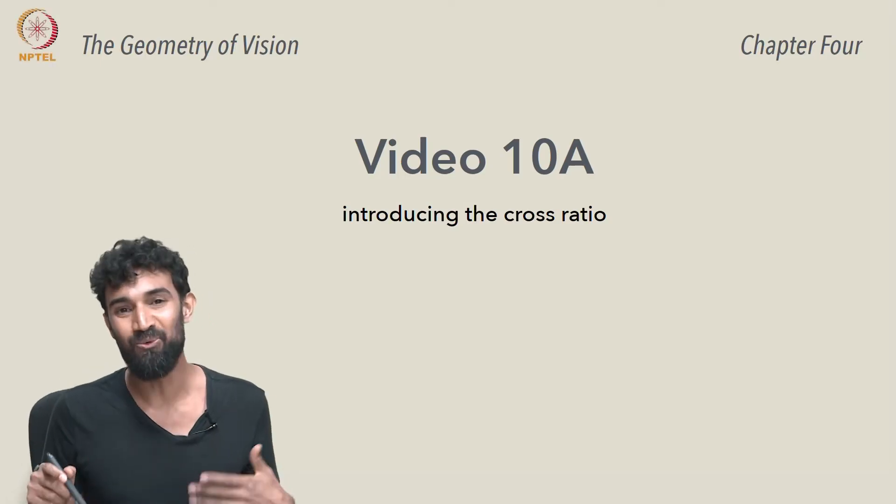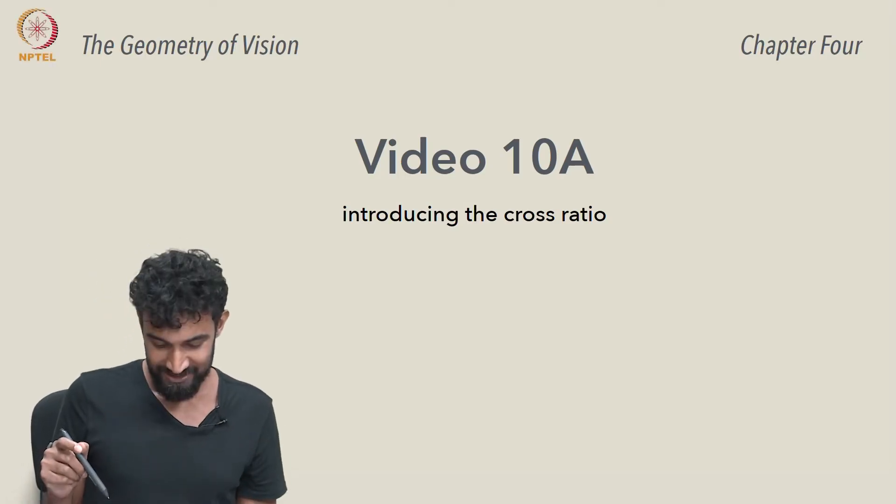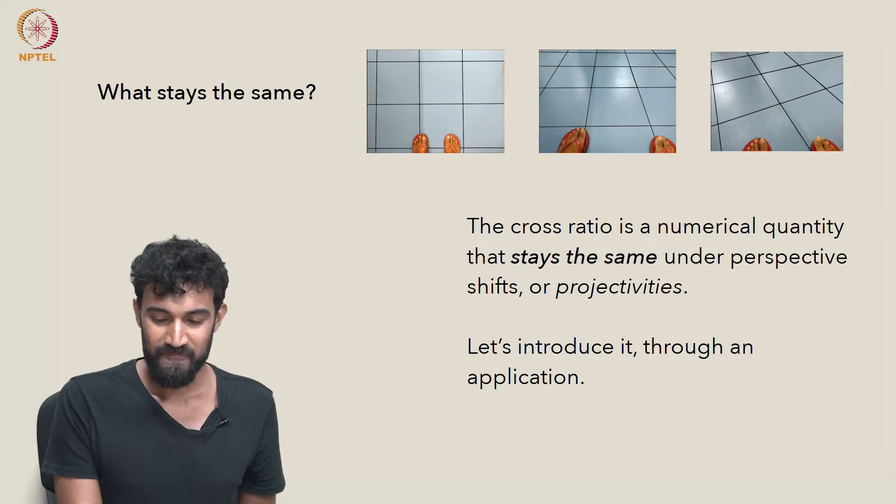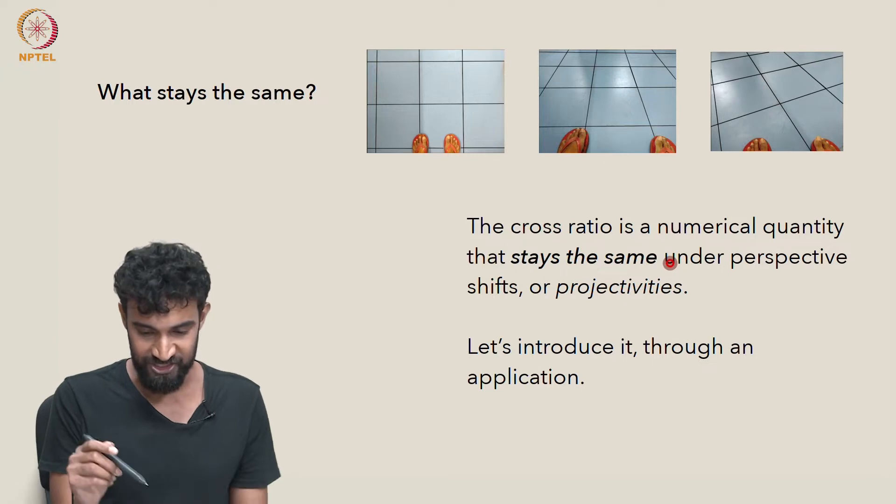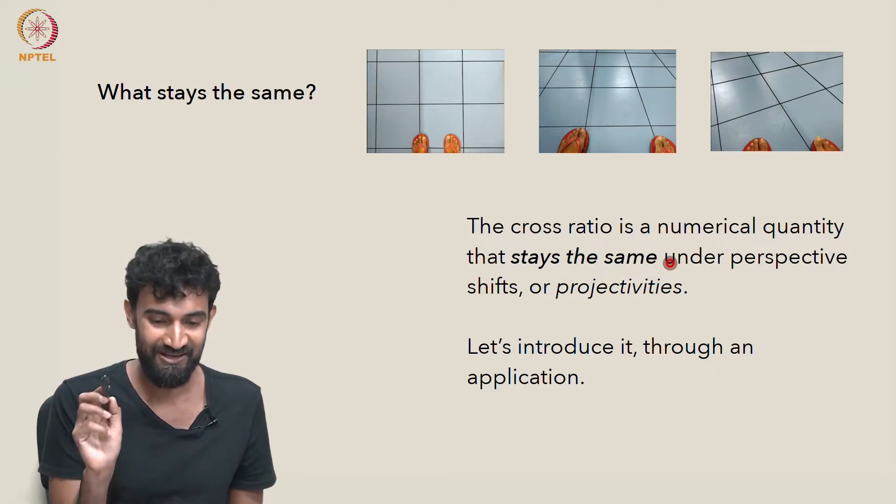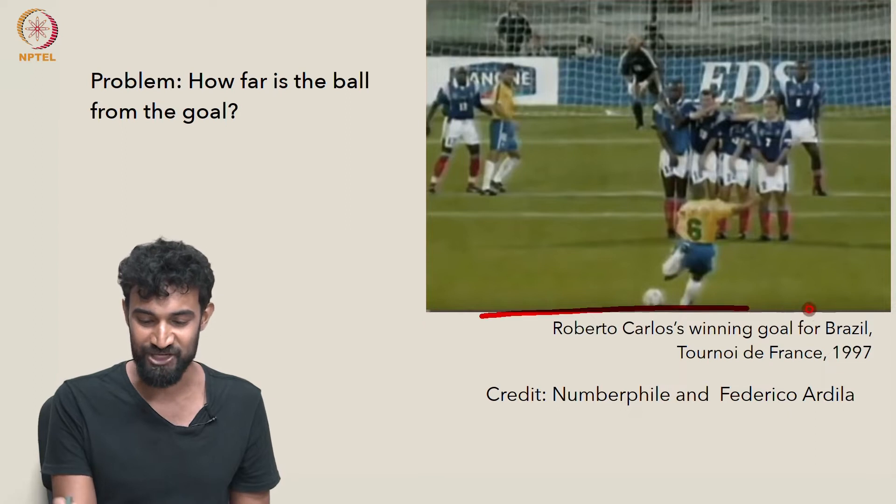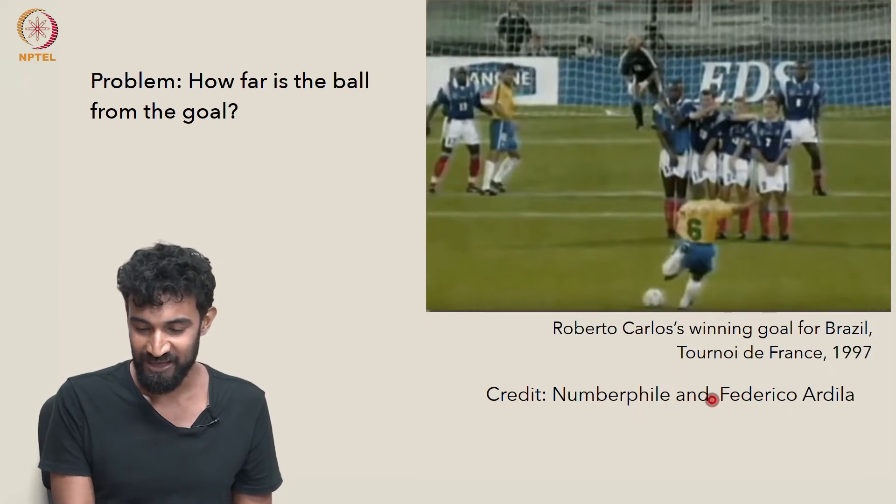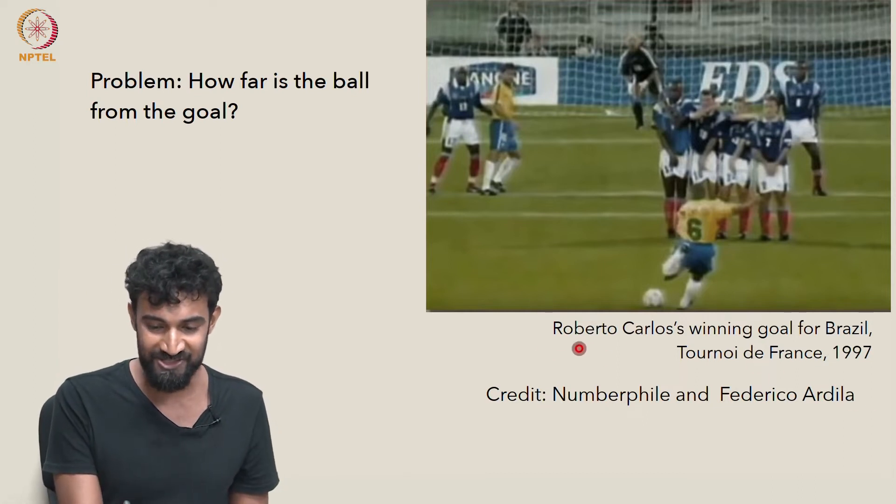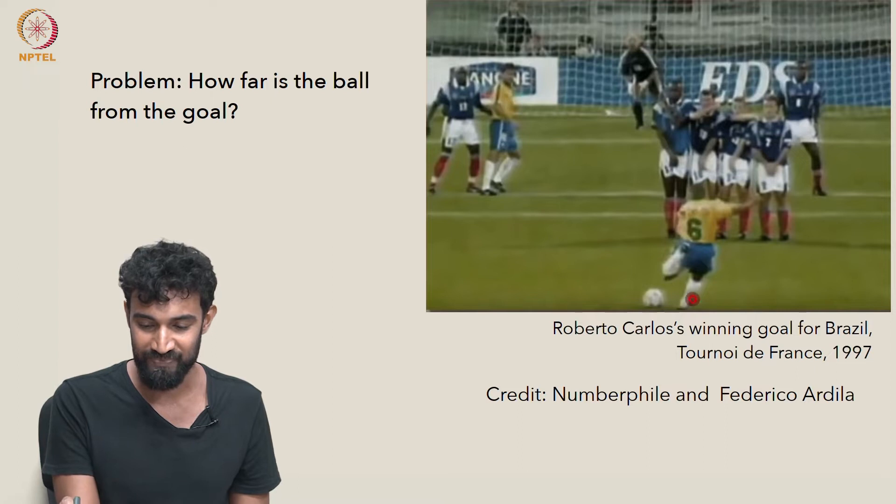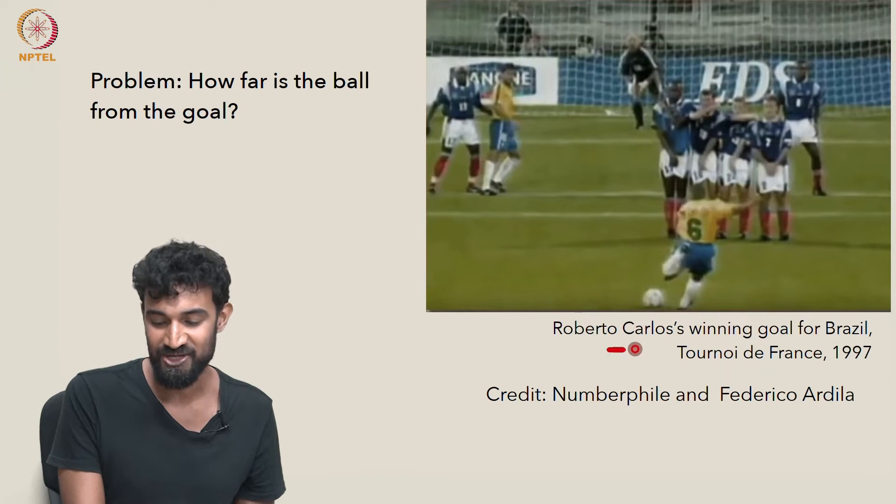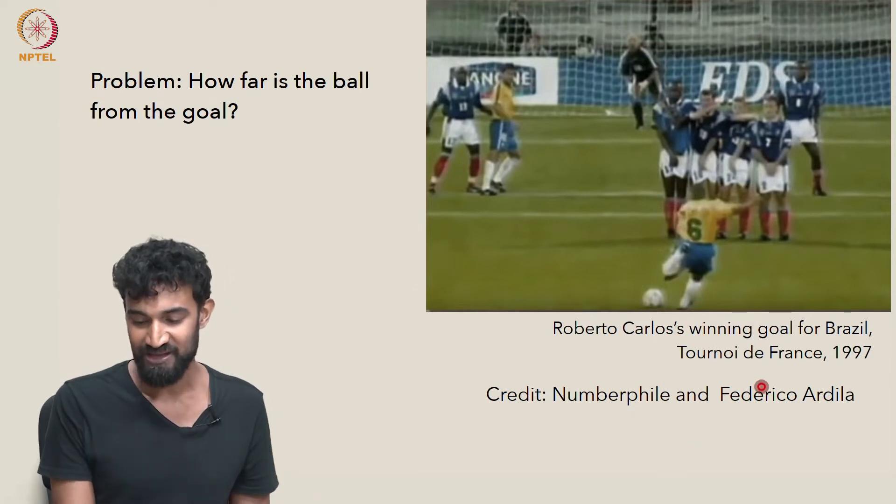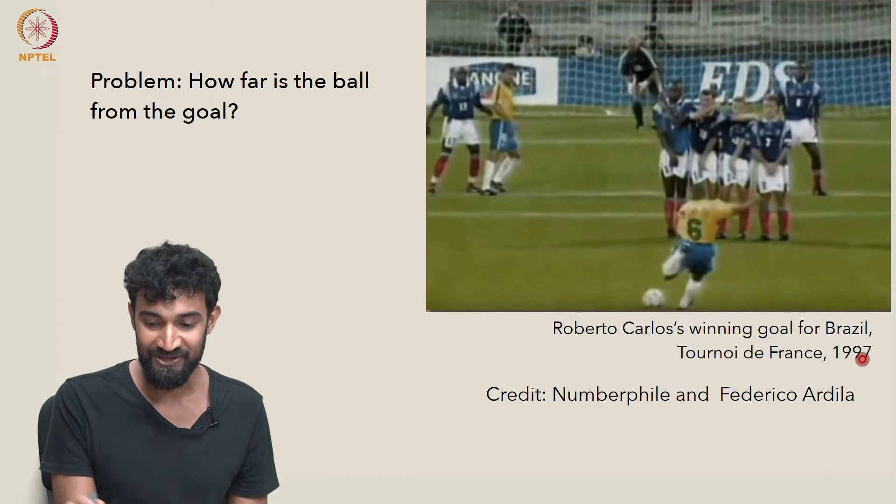All right, let's introduce the long-awaited cross-ratio. The cross-ratio is a numerical quantity that stays the same under perspective shifts, and I want to introduce it through an application. I'm stealing this application from a Numberphile video, and it's due to Federico Ardila. It concerns a very historic game of football in which Roberto Carlos scored a winning goal for Brazil, this is back in 1997, with a single kick.